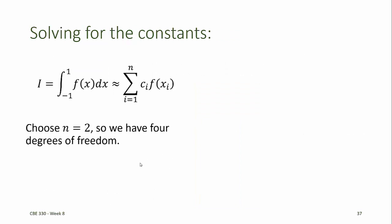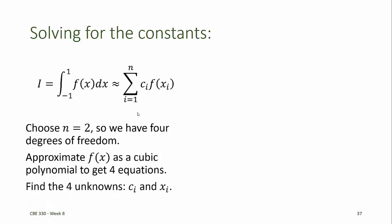Since we chose n equals 2, we have four degrees of freedom, and we approximate f(x) as a cubic polynomial to get four equations. These four equations then provide us with the four unknowns, the weights ci, and the values of x at which we evaluate the function, x sub i.